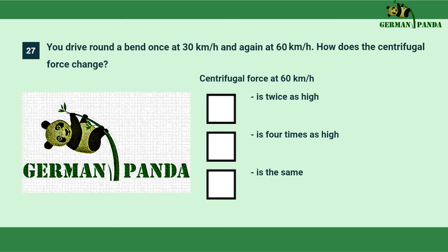You drive round a bend once at 30 km/h and again at 60 km/h — how does the centrifugal force change? The centrifugal force at 60 km/h is 4 times as high.